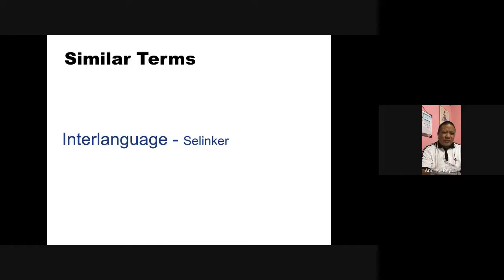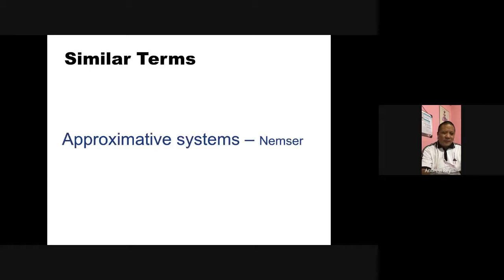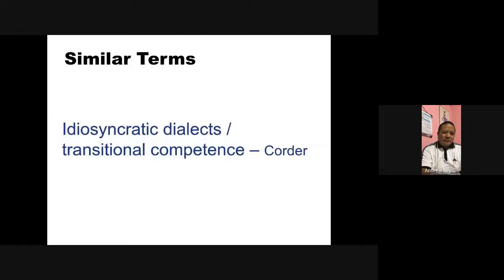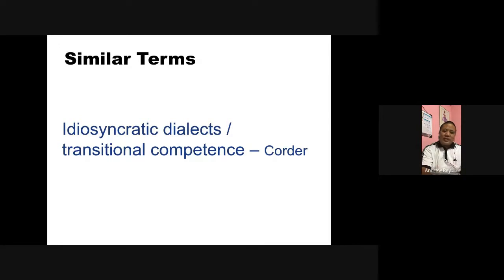There are different terms for interlanguage. According to Larry Selinker, this is called interlanguage. For Nemser, the term is approximative systems. According to Korder, the term is idiosyncratic dialects or transitional competence.